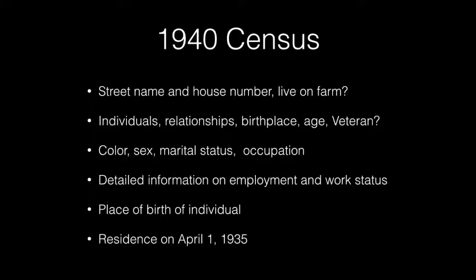The 1940 Census has the street name and house number, whether they live on a farm, the individual's relationships, birthplace, age, whether they are a veteran, color, sex, marital status, and occupation. It also includes detailed information on employment and work status, the place of birth of the individual, and the residence on April 1, 1935.